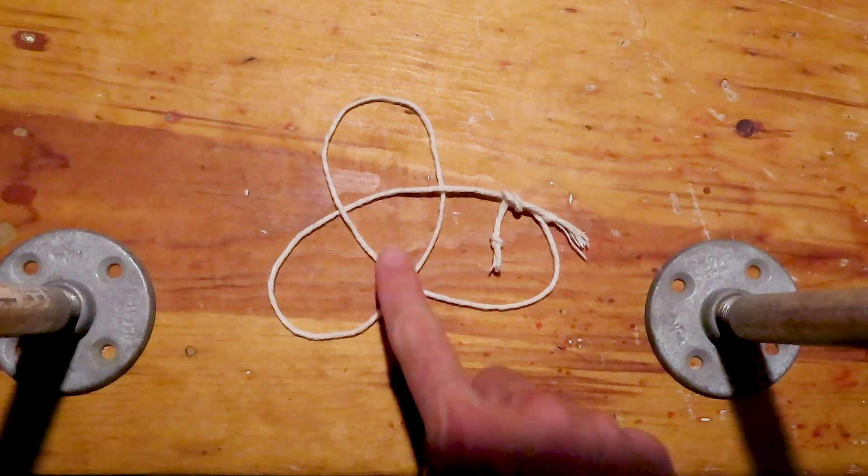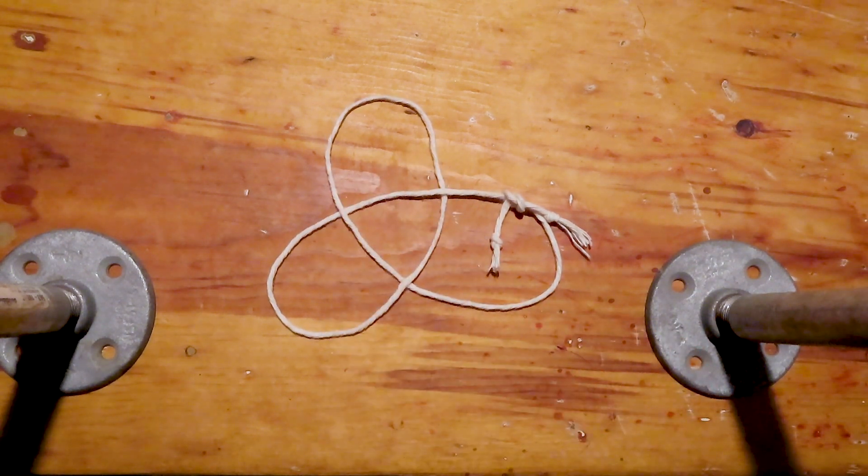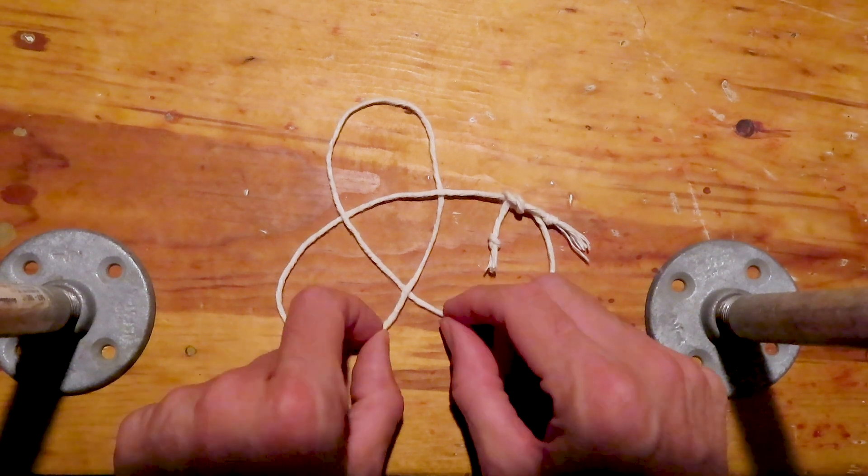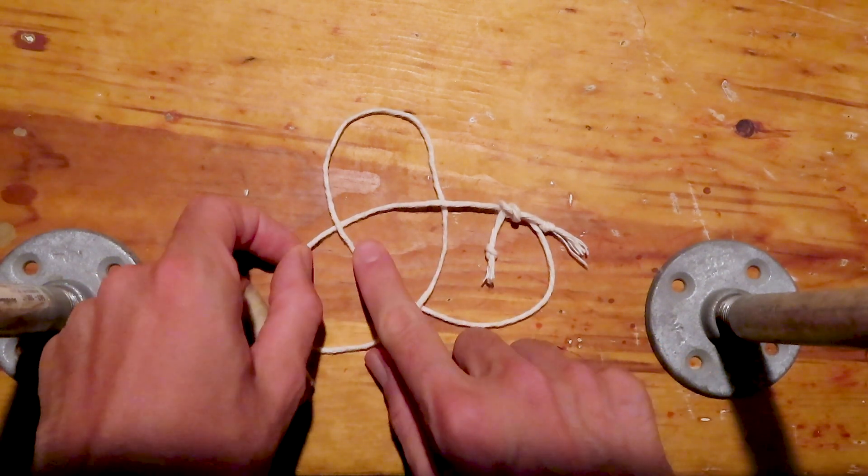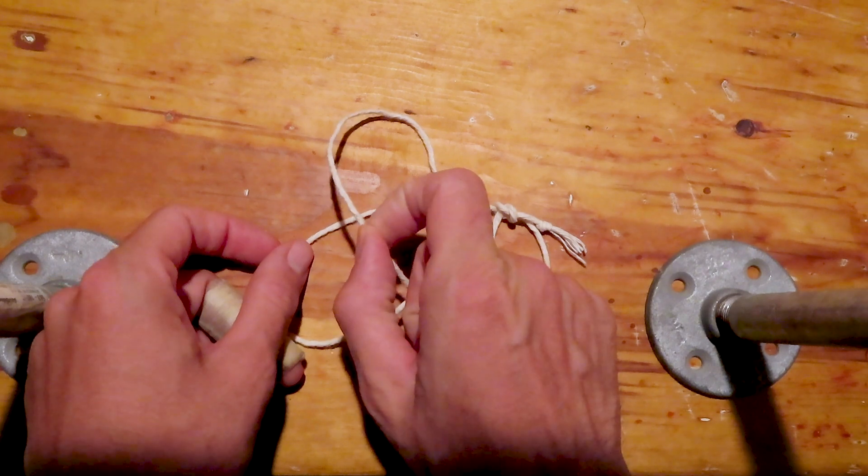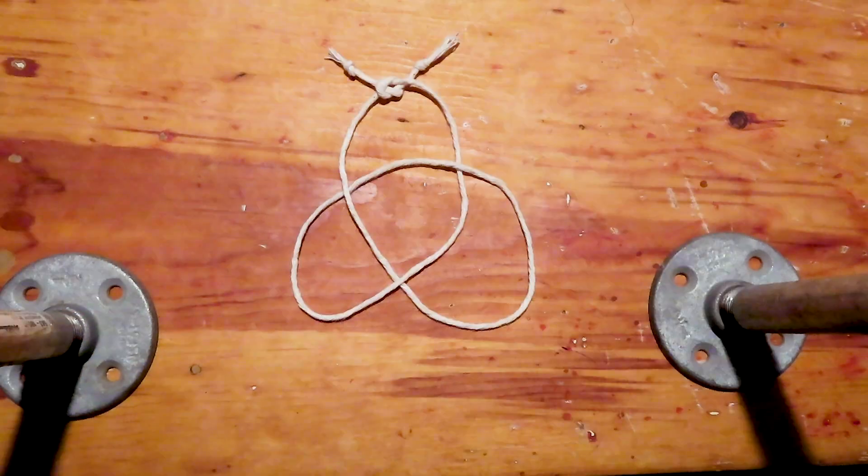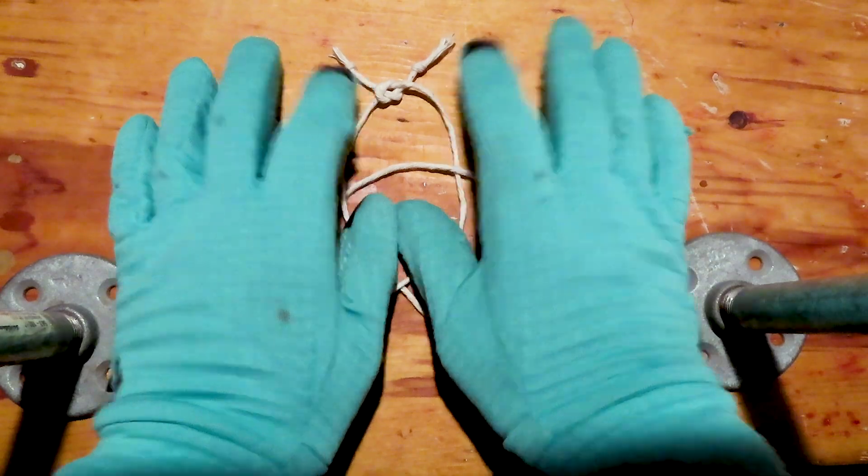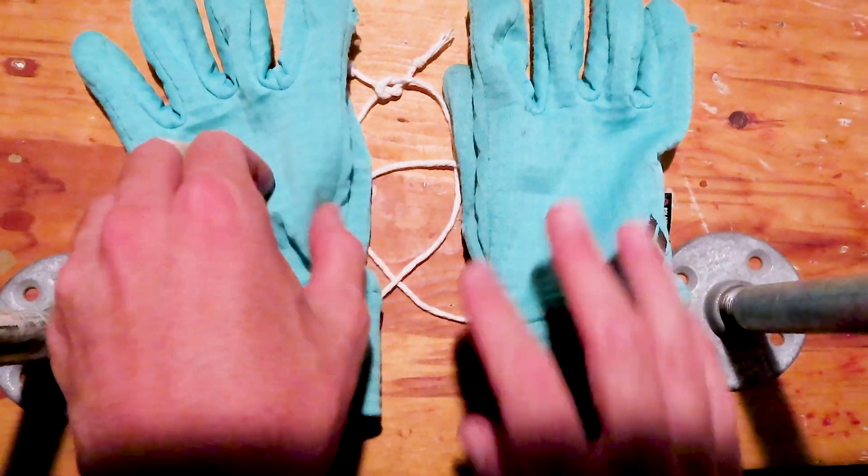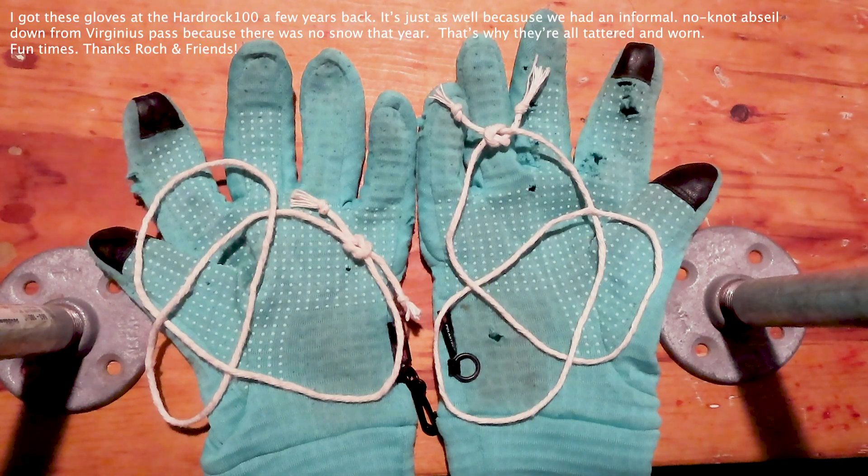As you can see, there are three crossings. Whence the name, trefoil. Folks will often say that the trefoil is the only knot with three crossings, and in some sense it is. But the trefoil is a chiral or handed knot. That is to say, there are two versions, a right-handed one and a left-handed one.